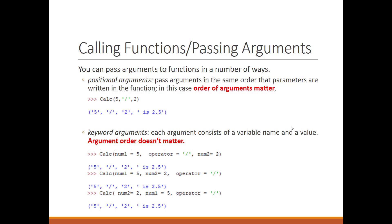The next one is keyword arguments. In this type, we type the name of the arguments and put the equals and the value. For example, in the calc function that we had, we say number one is five, the operator is division, and number two is equal to two. So the result is going to be 2.5.